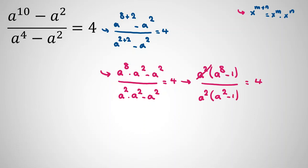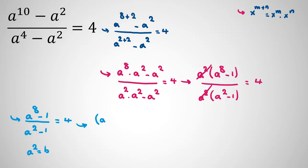Now we cancel a² from both numerator and denominator, leaving (a^8 - 1) / (a² - 1) = 4. Next, let's substitute b = a², so we consider a² as b.